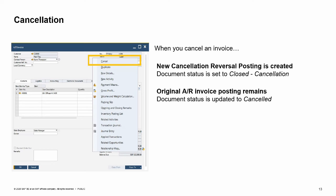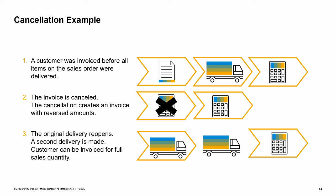A customer was invoiced before all items on the sales order were delivered; the customer had asked not to be invoiced until the full order was received. The customer had ordered several items on a sales order which were partially delivered. When these items were invoiced, the delivery document status was closed and the open quantity on the delivery was zero. To resolve the customer's complaint, the invoice is cancelled. The cancellation creates an AR invoice with reversed amounts. The original delivery reopens, a second delivery is made, and now the customer can be invoiced for the full sales quantity.